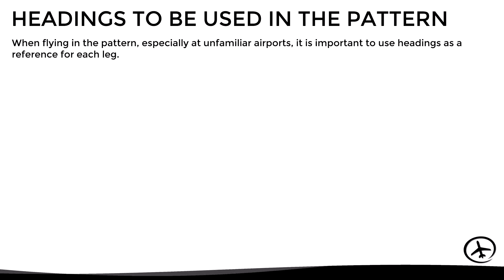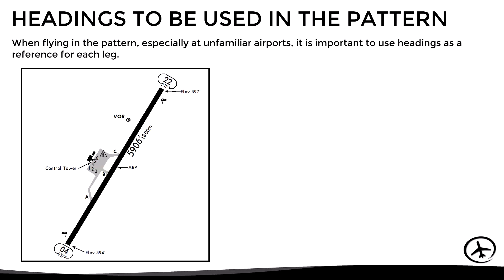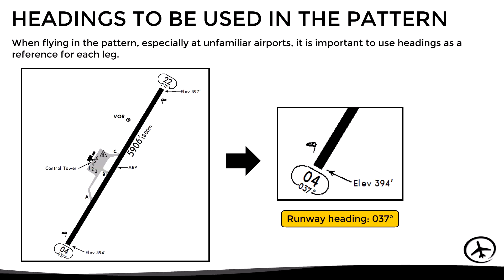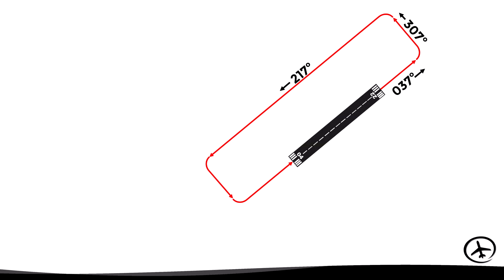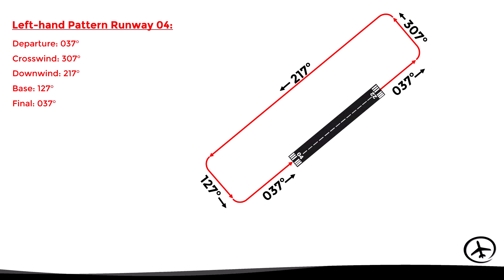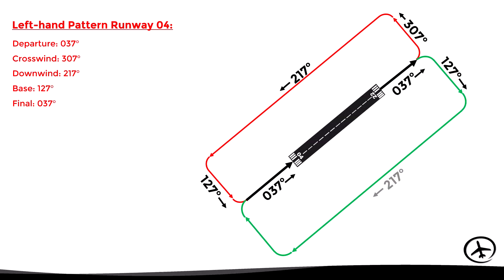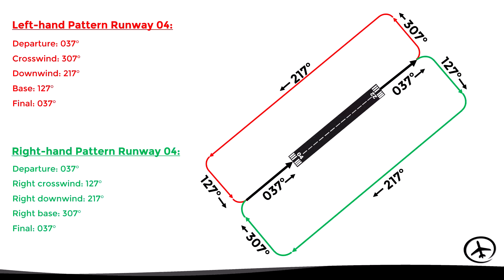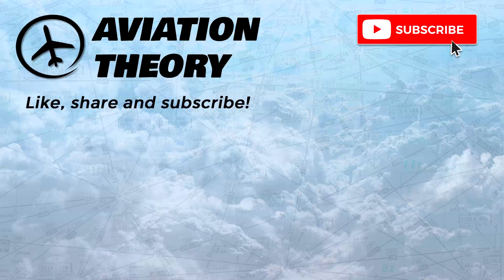A final thing to keep in mind is that when flying in the pattern, especially at unfamiliar airports, it is important to use headings as a reference for each leg. For example, the heading of runway 04 is 037, so using this information we can start adding or subtracting 90 degrees from this heading in order to figure out the heading for each leg of the pattern and make it easier to fly. I hope the information presented in this video was useful — don't forget to share, like, subscribe, and leave a comment below. Thanks for watching.